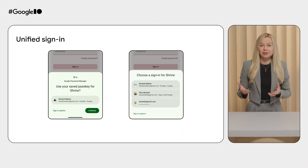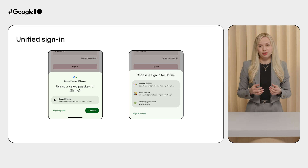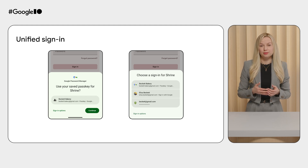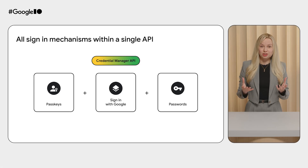The Credential Manager API provides a simple user experience by consolidating passkeys, sign-in with Google, and passwords in one single interface. To reduce complexity, the system automatically shows the most secure and relevant login option, and users always have a choice to select their sign-in method. Using multiple APIs to build different sign-in methods can be a real challenge. To simplify integration and ongoing maintenance, Credential Manager supports all of these authentication methods in a single Jetpack library. Credential Manager is generally supported on Android 4.4 and higher, and passkeys are supported on Android 9 and higher.